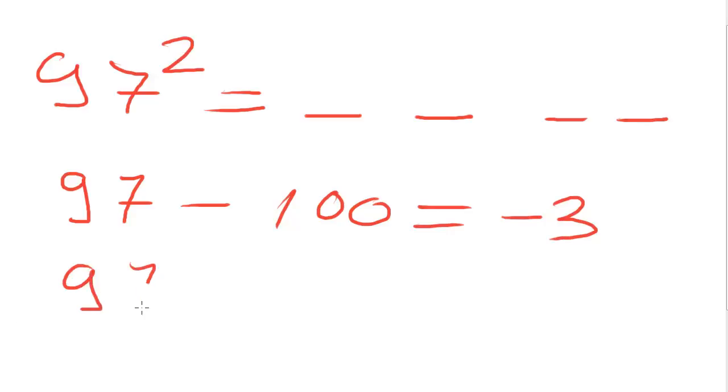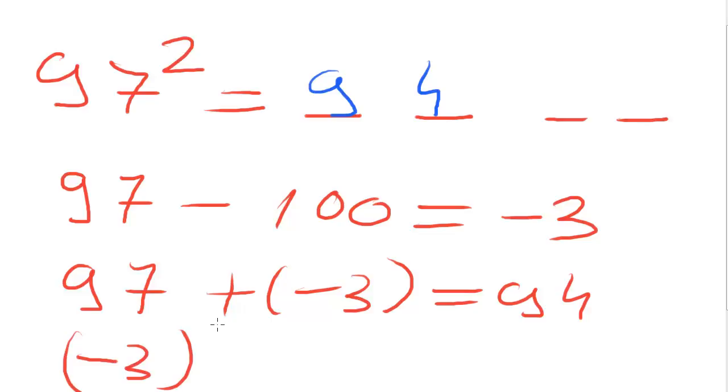Our number plus the difference, which is ninety-four. Complete the first two digits. And now raise minus three to power two. And the result is nine. And this is the final result.